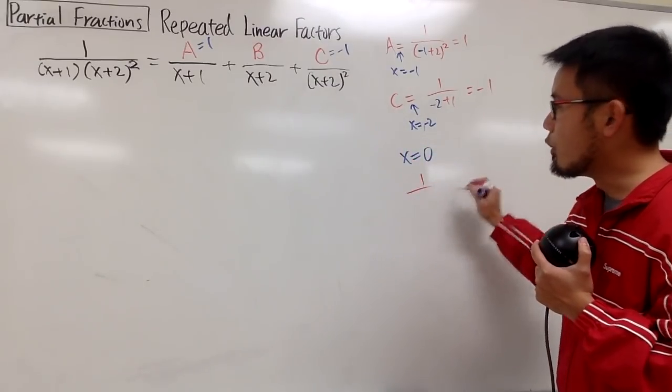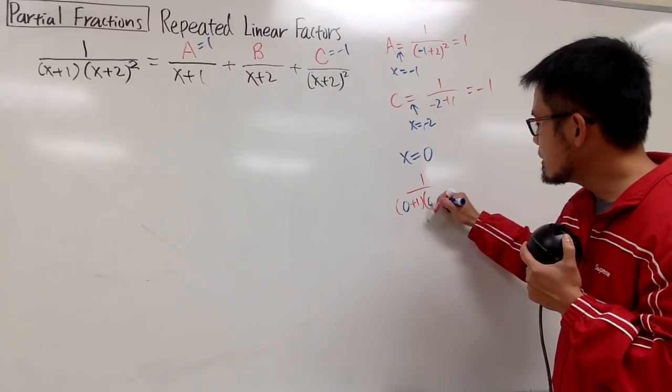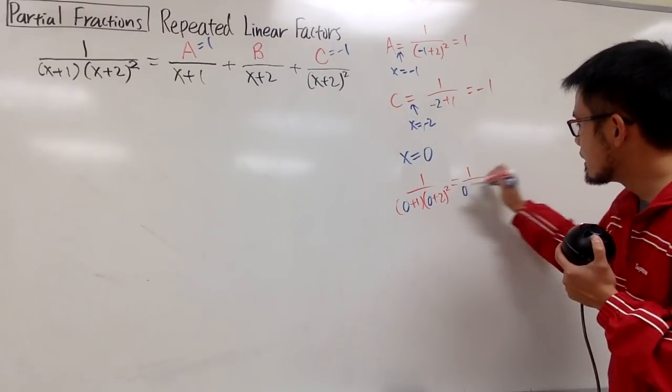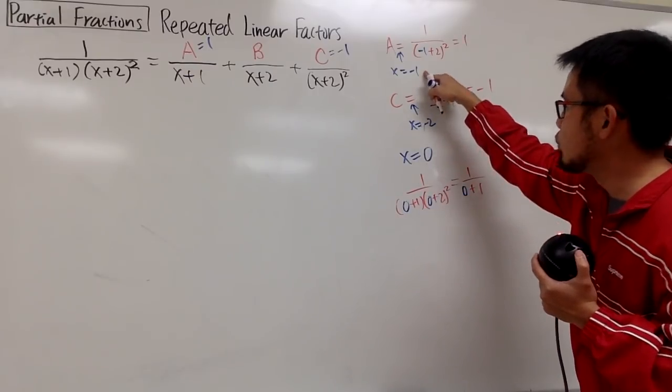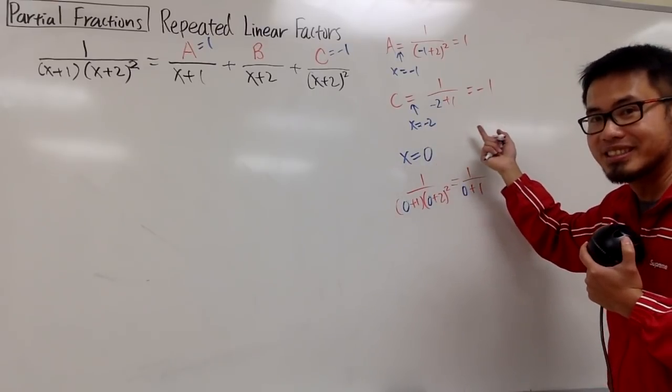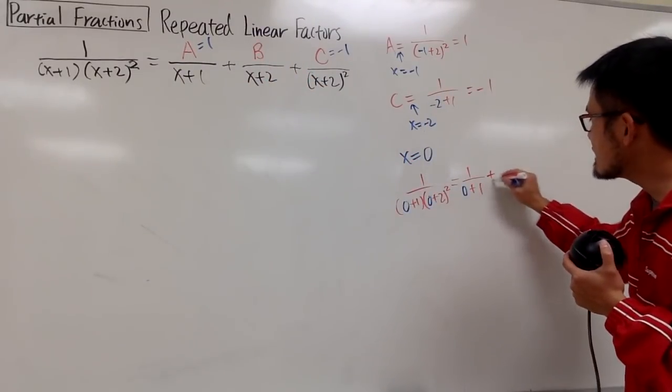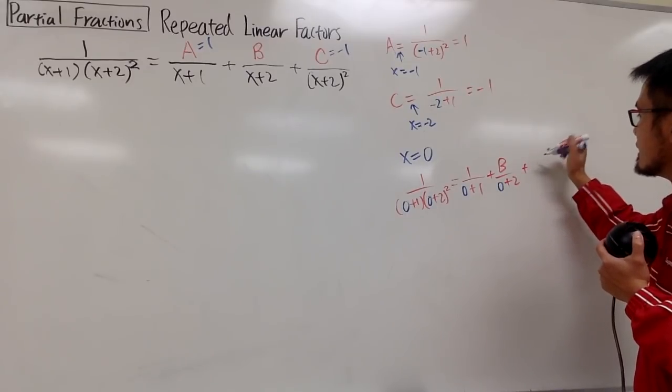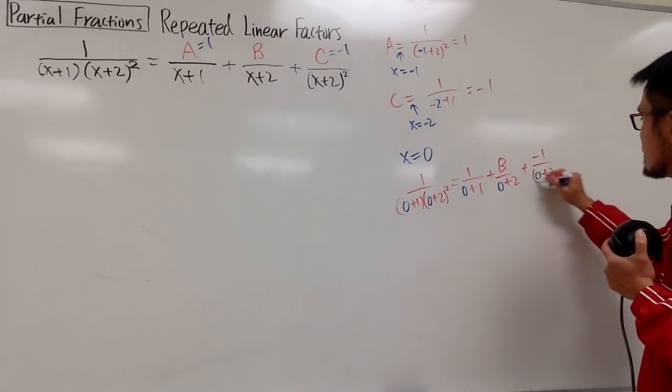So 1 over 0 into the x. So it's 0 plus 1 times 0 plus 2 squared, and make that equal to 1 over 0 plus 1. I'm letting all the x equal to 0. You can let x equal to whatever you want, besides negative 1 and besides negative 2, because we used it already. And of course, you should pick an easy number. Otherwise, it's going to be crazy. Anyway, plugging 0 into this x, we get plus b, I don't know yet, right? And then 0 plus 2. And then plus c is negative 1 over, plugging 0 into here, we have 0 plus 2 squared.